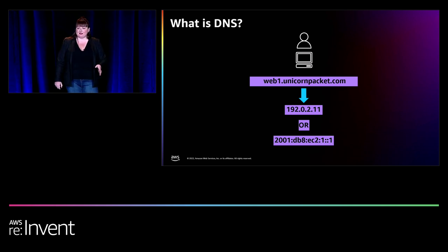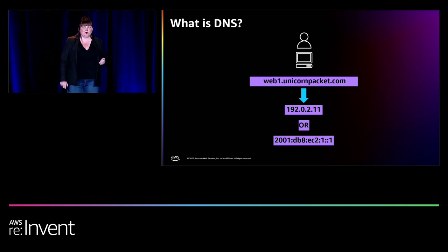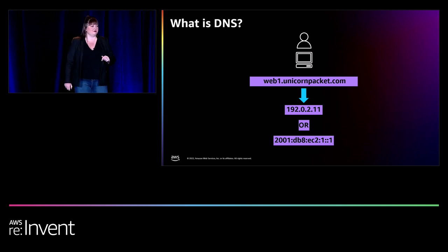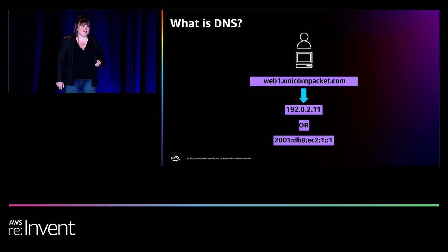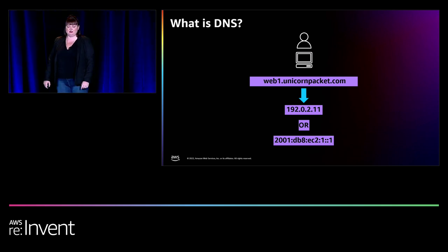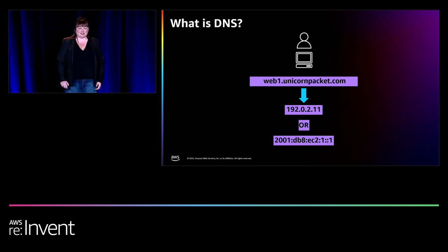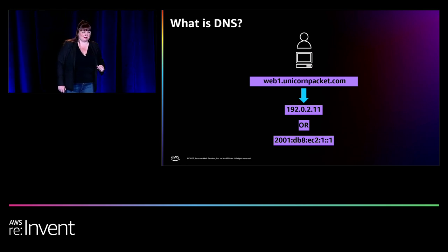Imagine you have a web server connected to the internet hosting the Unicorn Packet website. That web server is going to have an IP address — 192.0.2.11. That IP address is from the documentation range, RFC 5737. But IP addresses as a whole are how computers, smartphones, tablets, and other IP-enabled devices communicate with one another. Now, humans don't really like numbers — we prefer names, easy to memorize, easy to type in. Can you imagine trying to remember that IPv6 address to get to a website?